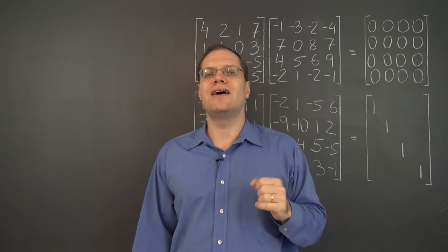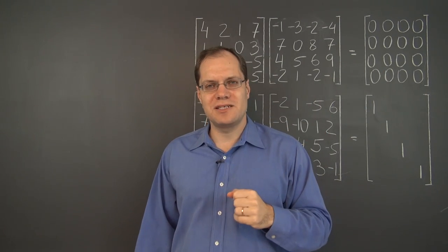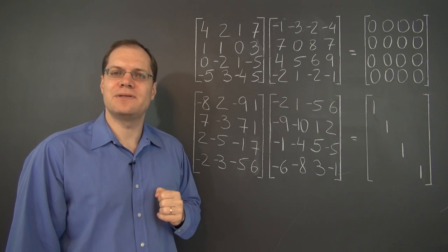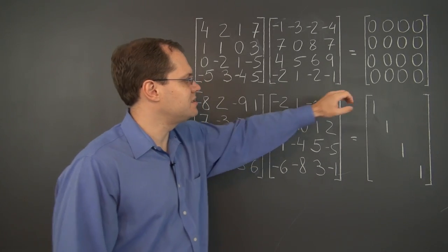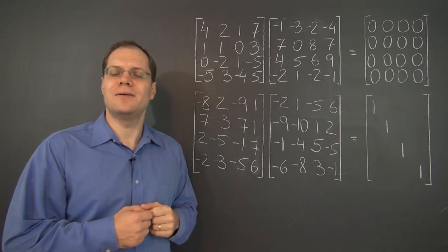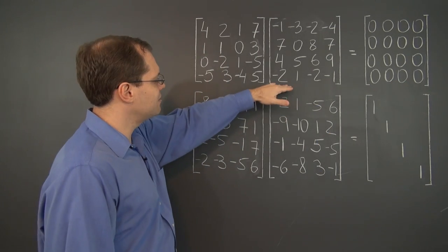This is just another way in which matrix multiplication is different from multiplication of ordinary numbers. With ordinary numbers, the only way to get zero as the result of a product is for one of the numbers to be zero.